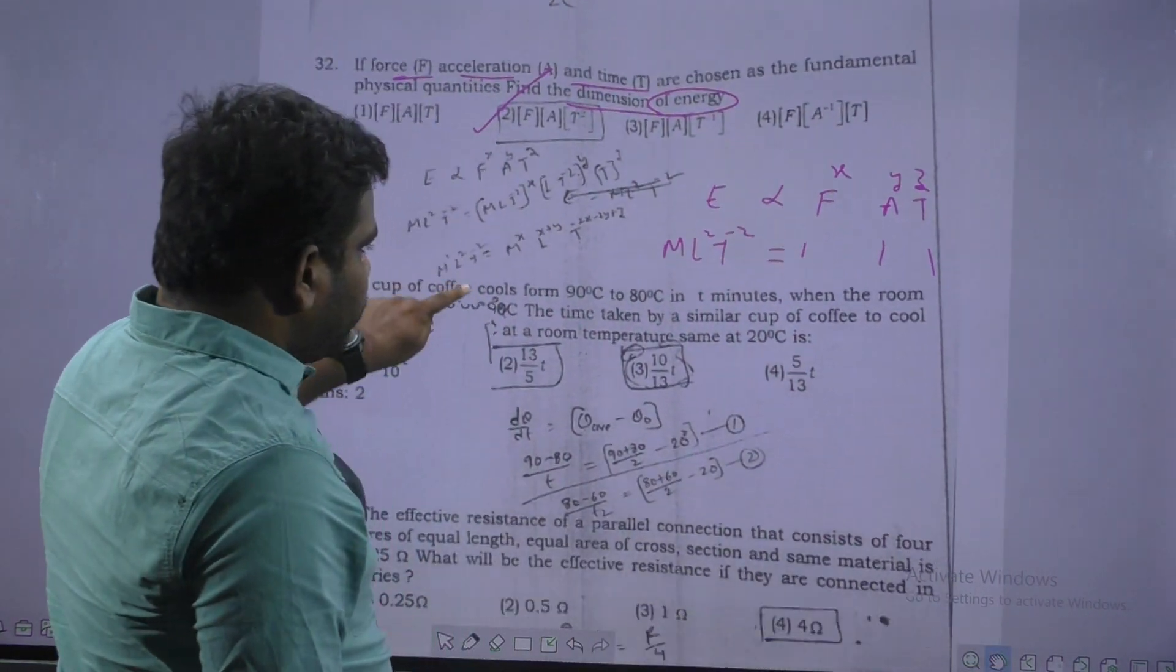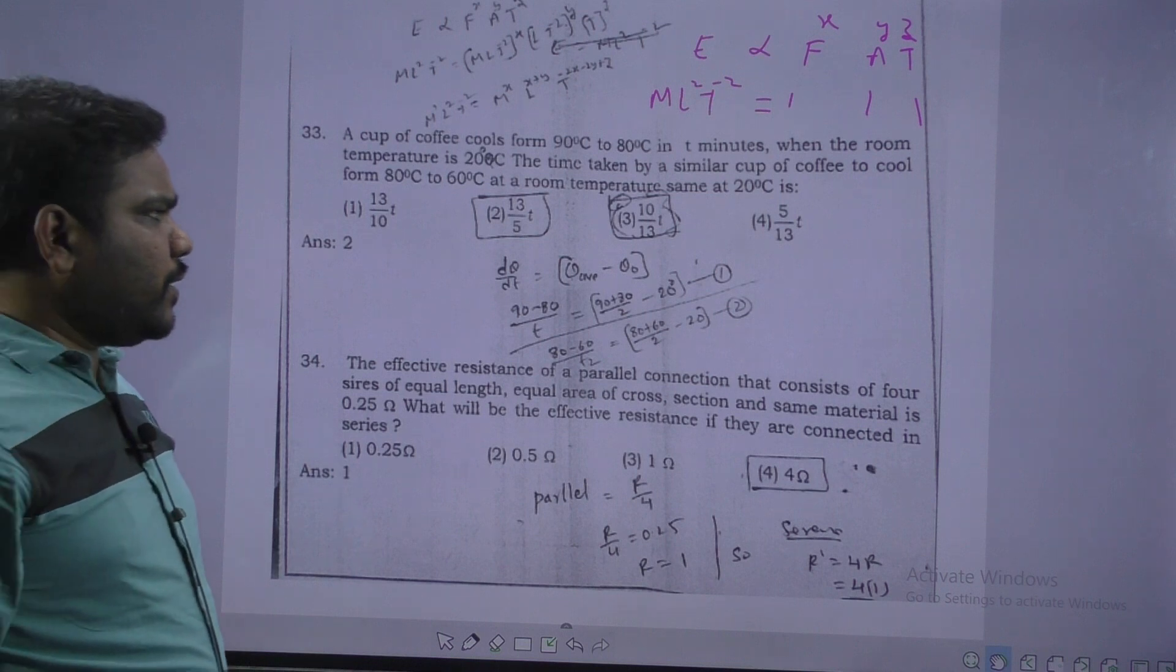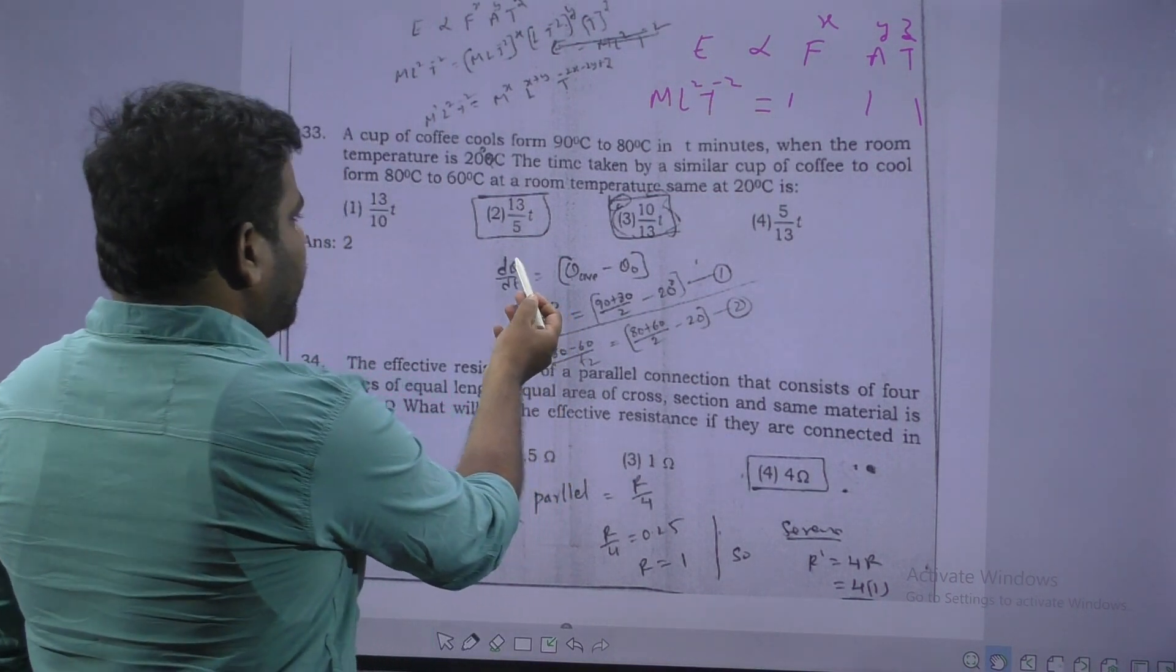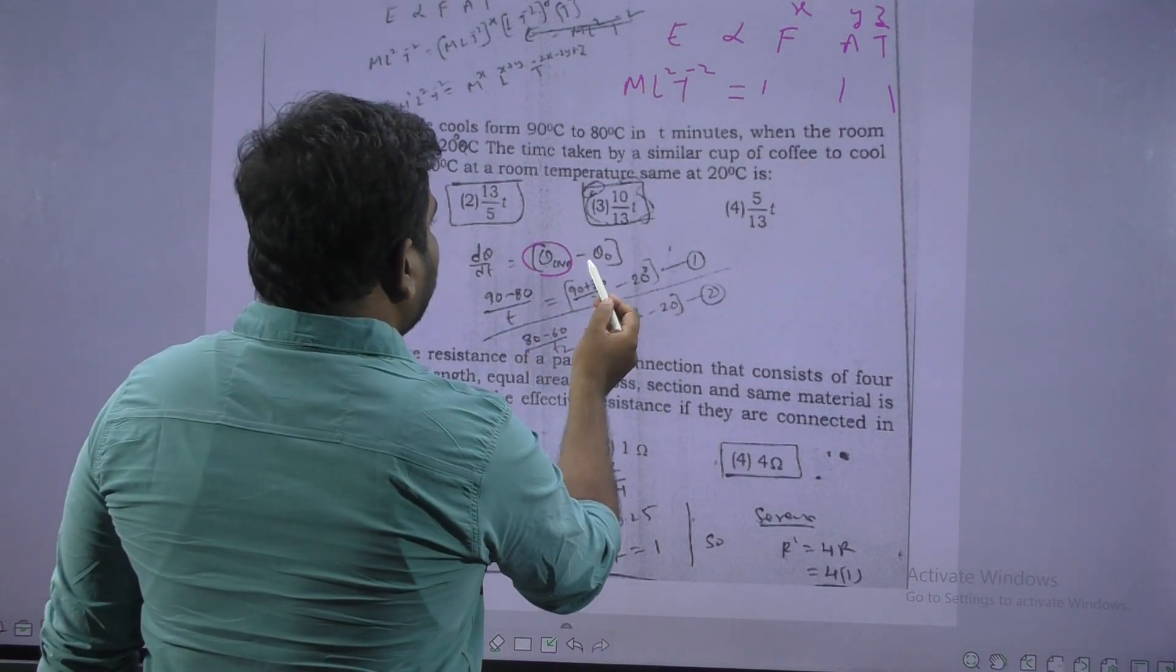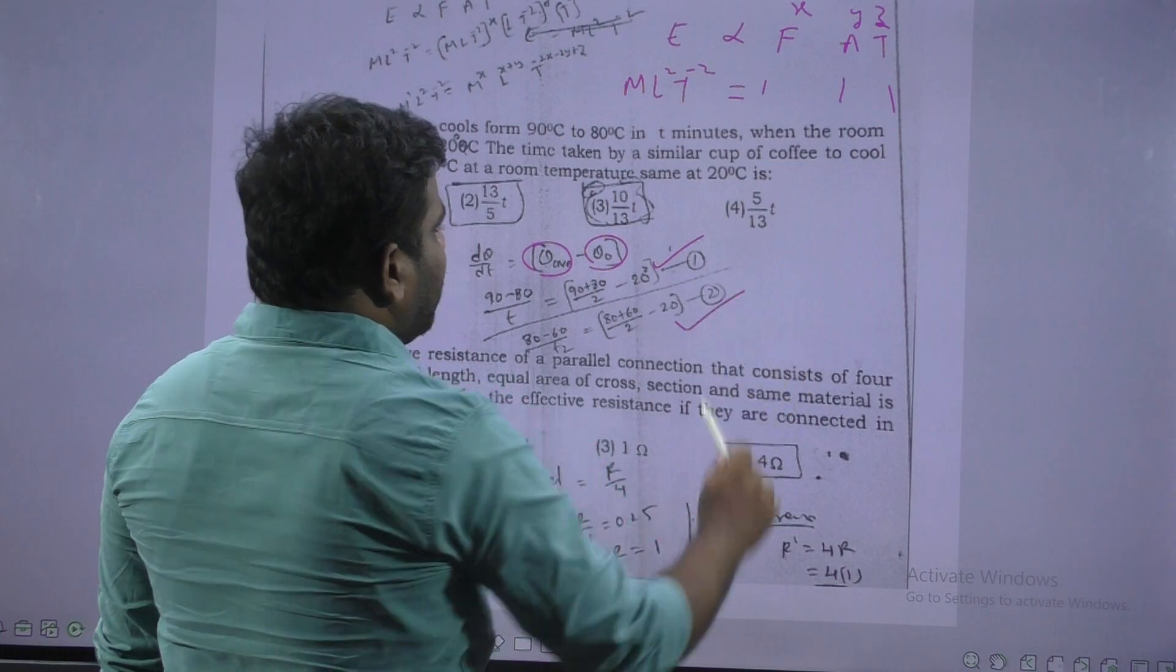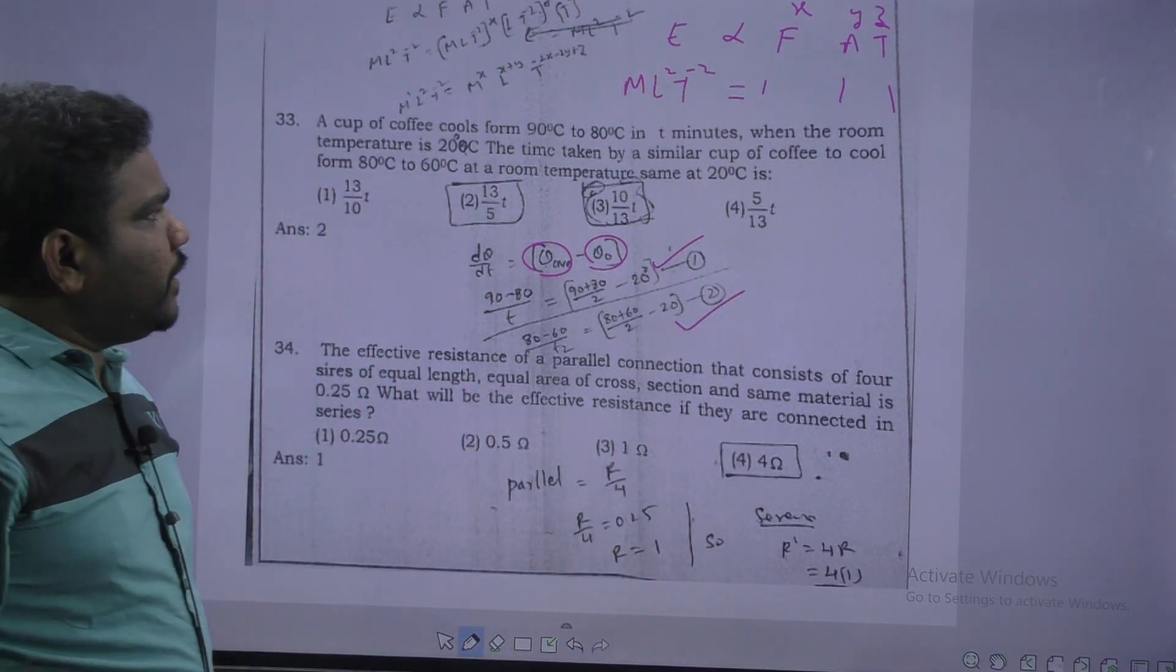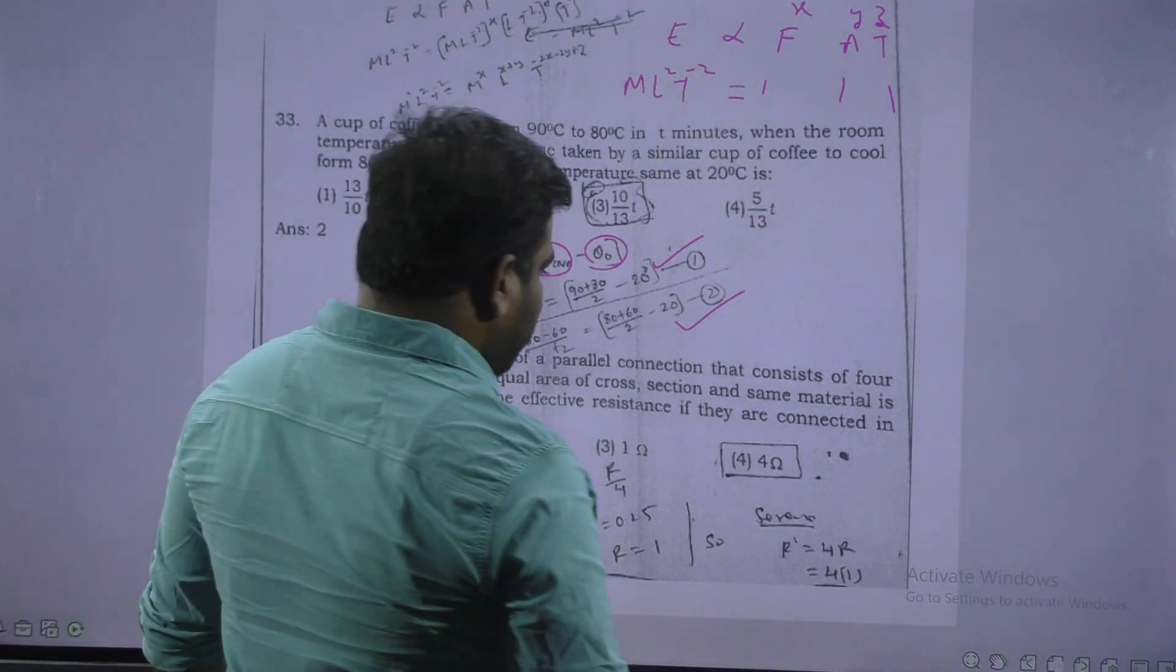Next. Observe this question. This is exactly Newton's law of cooling. Direct formula. Rate of cooling is equal to average temperature minus surrounding temperature. So two cases problem. First case and second case. Just divide these two. You will get 13 by 5, option 2 correct.